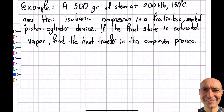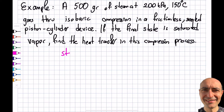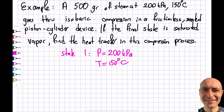Let's read the question first. We have 500 grams, or half a kilogram, of steam at 200 kilopascals and 150°C. I'll write State 1 as: P = 200 kPa and T = 150°C. This is my State 1. The process described is isobaric compression.